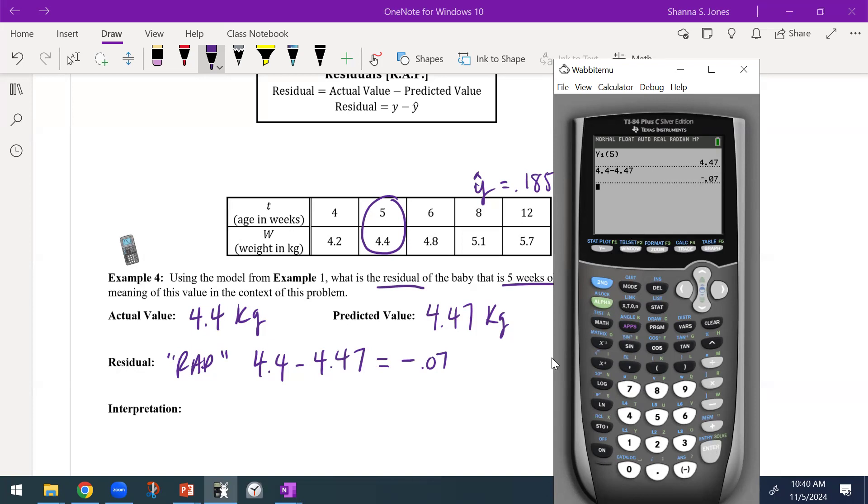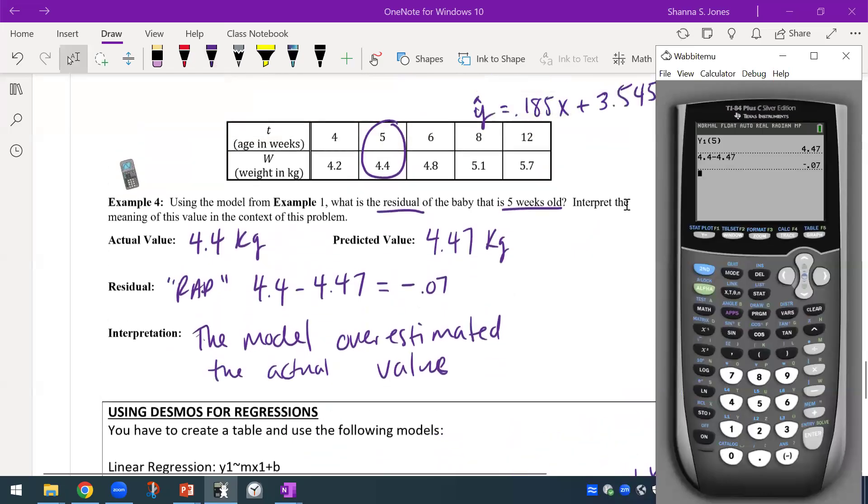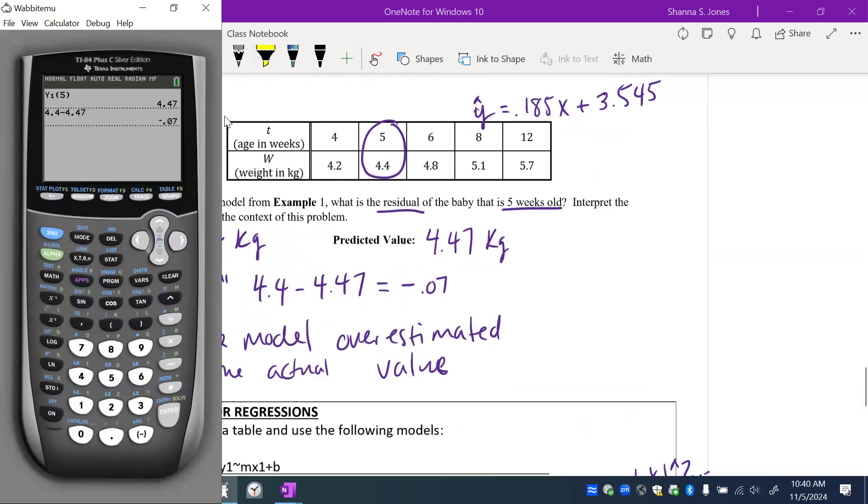So now your residual, remember we're going to RAP about it, I'm going to RAP about it. So that means it's our actual minus our predicted. So our actual value minus our predicted value. So we have 4.4 minus 4.47, that's what our residual is going to come out to be. So when you have a negative residual that is what we call an overestimate. A negative residual means that we have an overestimate of the actual value. So interpretation: the model overestimated the actual value.